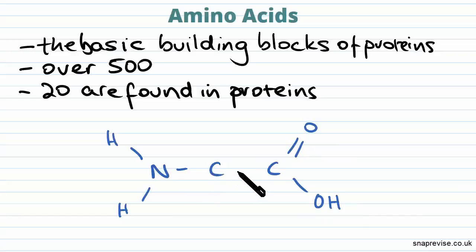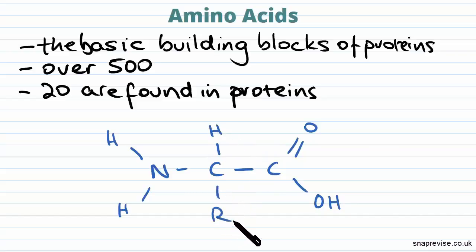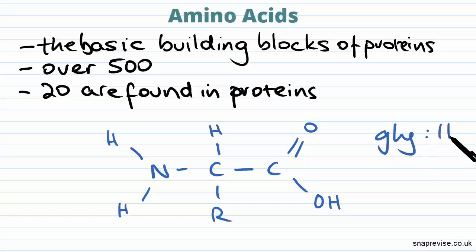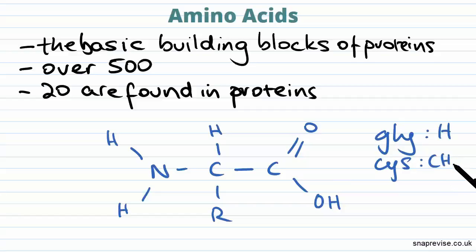These are joined by a central carbon, and the central carbon is bonded to a single hydrogen atom and an R group. The R doesn't stand for an element necessarily, but it stands for any functional group. For example, in glycine, the R group is simply another hydrogen atom, whereas in cysteine, it's actually CH3S.